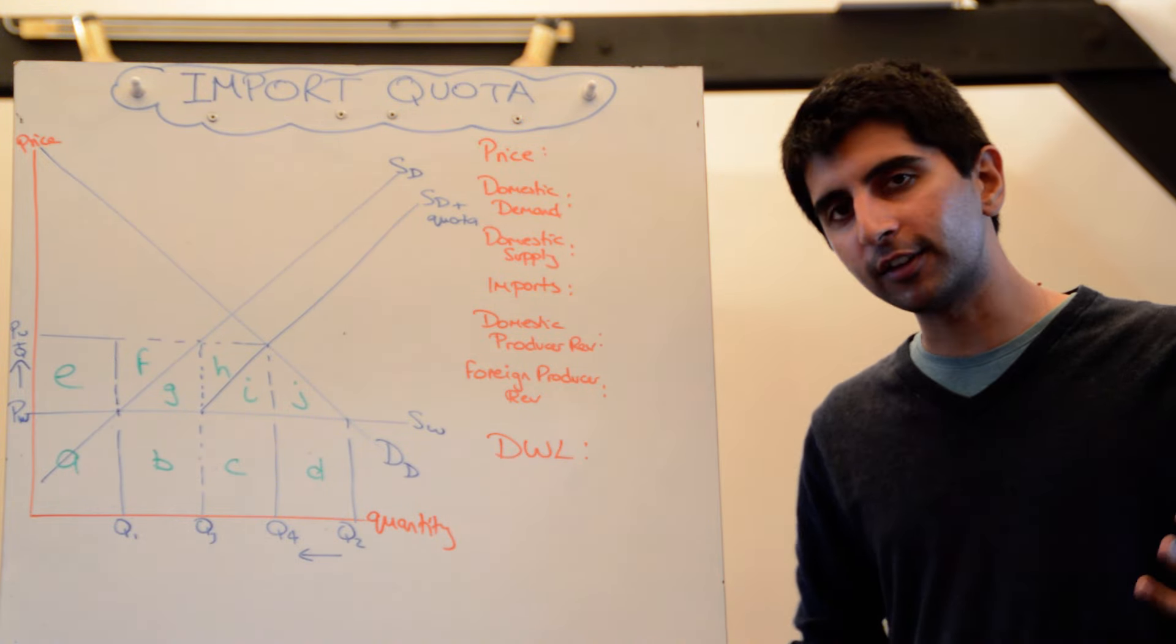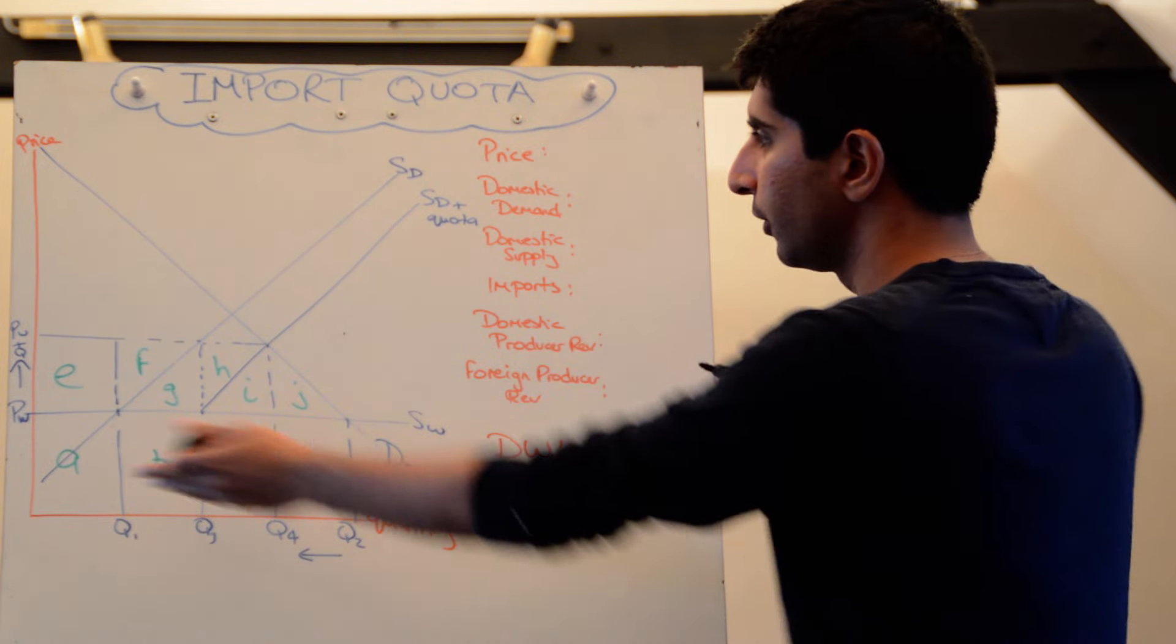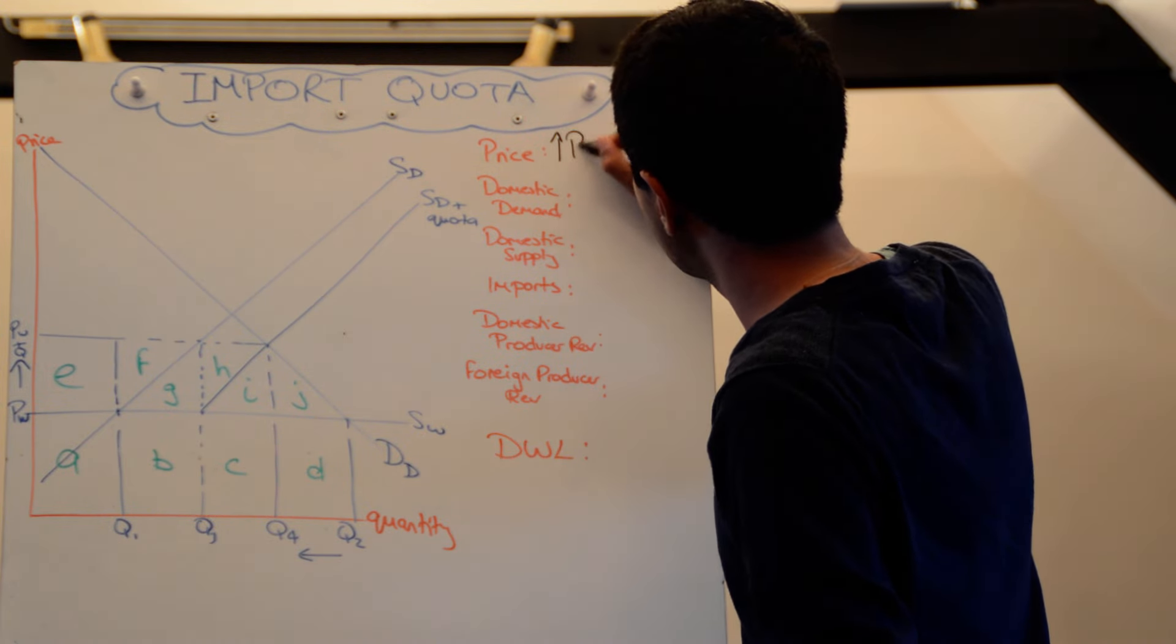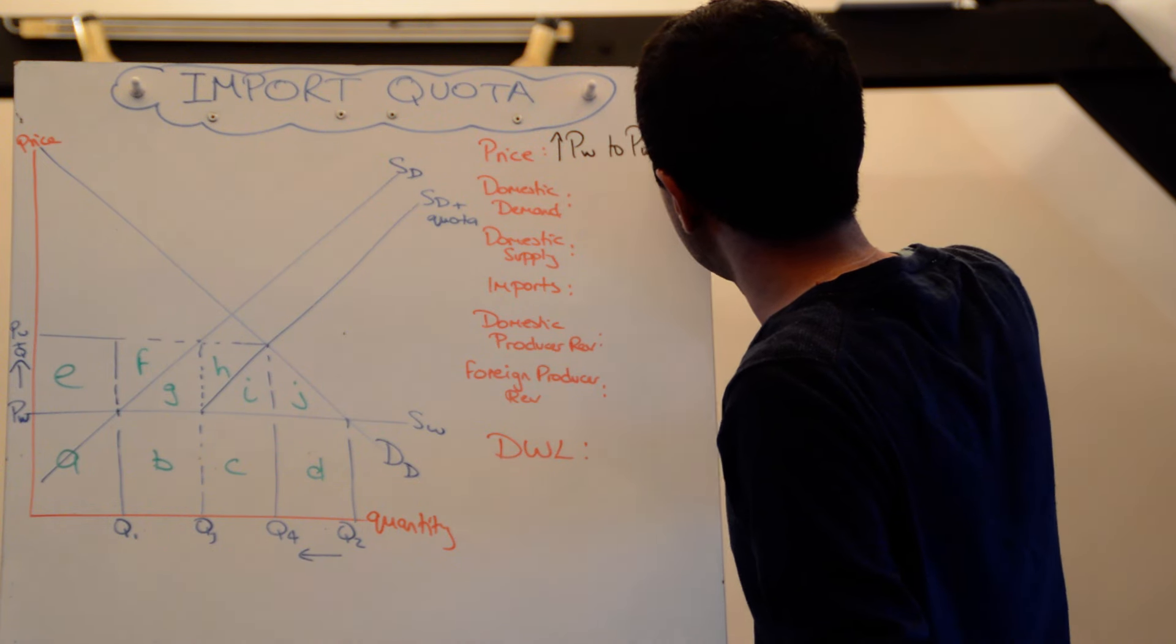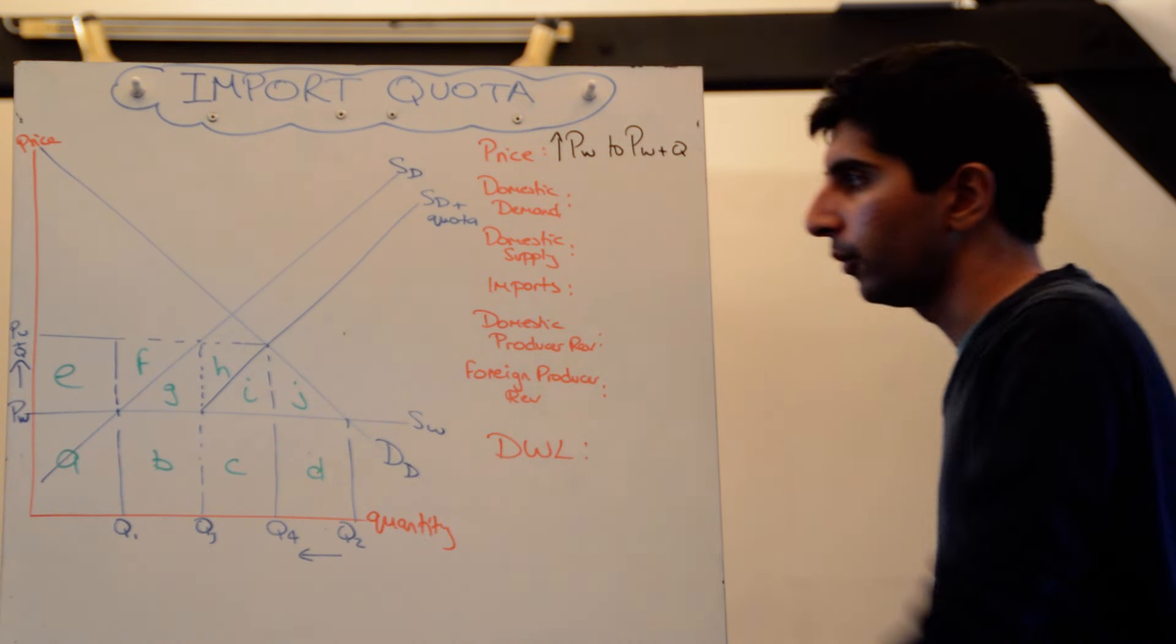Start with price. What's happened to the price as a result of this quota? You'll see it's increased. So price has gone up from Pw to Pw plus Q. So an increase in price.